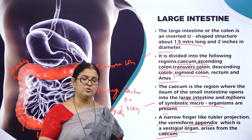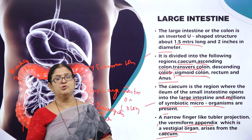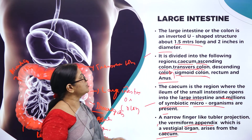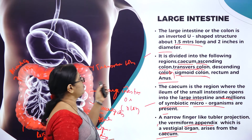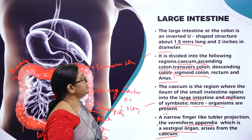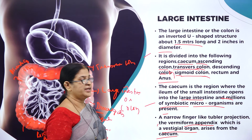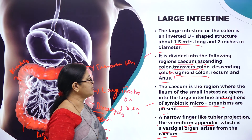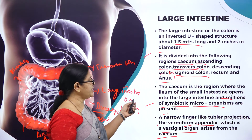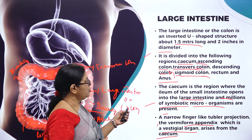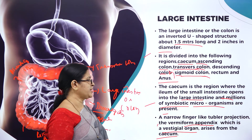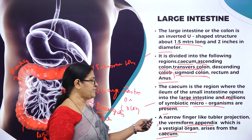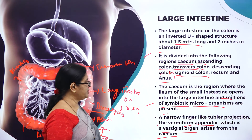When the appendix grows beyond its size and disturbs other organs, it is removed — that removal is called appendicitis. Even if removed, it does not affect the digestive system, which is why it is called a vestigial organ. To summarize: the large intestine or colon is an inverted U-shaped structure about 1.5 meters long and 2 inches in diameter, divided into cecum, ascending colon, transverse colon, descending colon, sigmoid colon, rectum, and anus. The vermiform appendix, a vestigial organ, arises from the cecum.